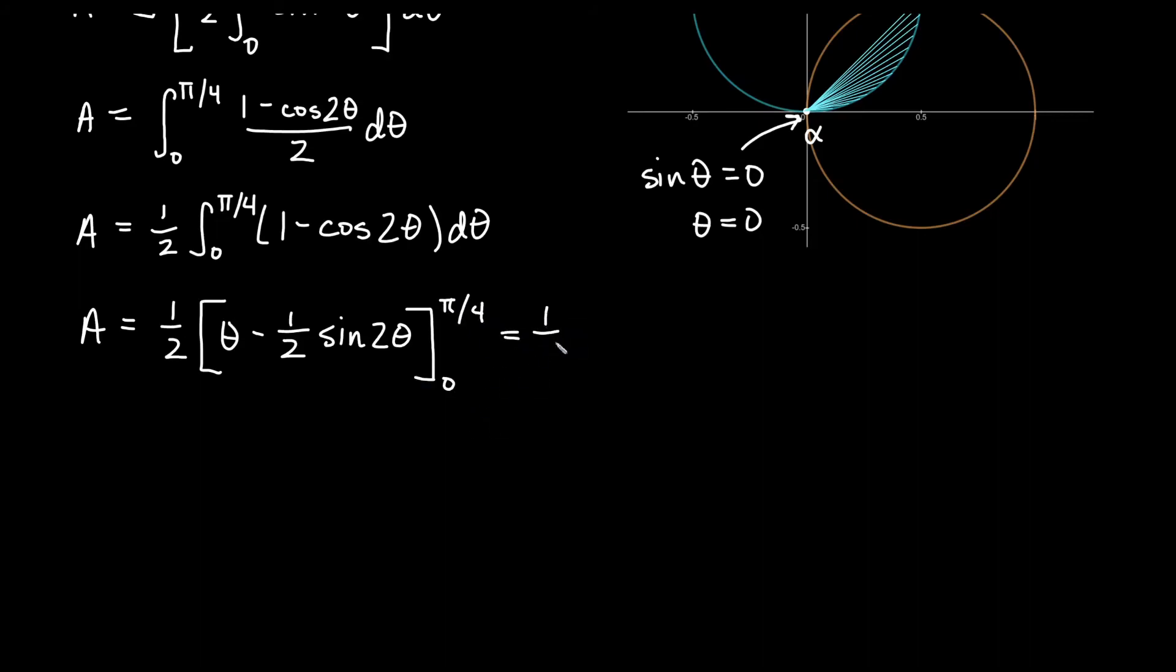Let's go ahead and plug those in. So we'll get one half. First I will get pi over four minus one half sine of two times pi over four would be pi over two. Minus plugging in zero I would get zero minus one half sine of zero. And you can probably tell by looking at these this is zero obviously and sine of zero is also zero. So here we're going to get one half times pi over four minus sine of pi over two is one so one half times one would just give us half there. And for this one we will then distribute the half and we'll get pi over eight minus one-fourth.